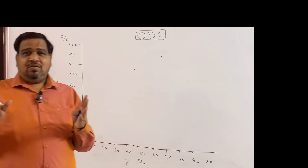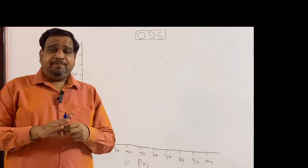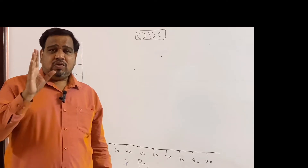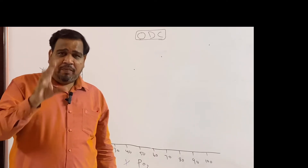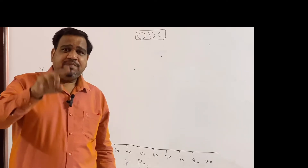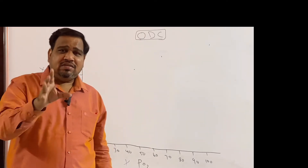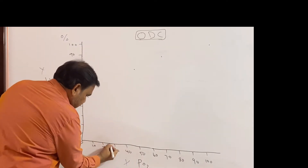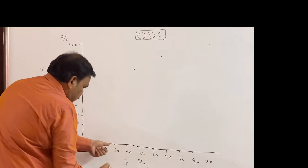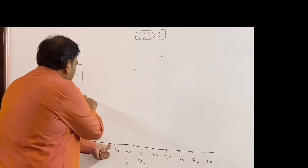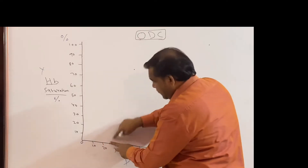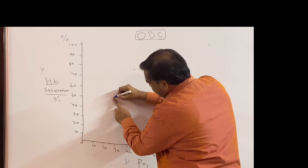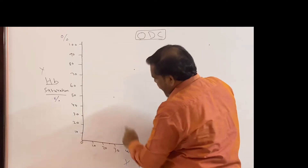Now we define P50. P50 means the partial pressure of oxygen at which hemoglobin is 50% saturated. The answer is 26 mmHg. So at PO2 of 26, hemoglobin saturation is 50%. That is why 26 is called P50. We mark: PO2 26, saturation 50%.